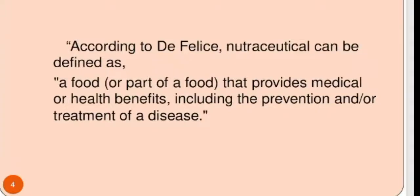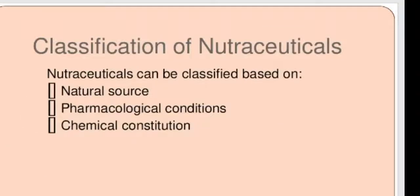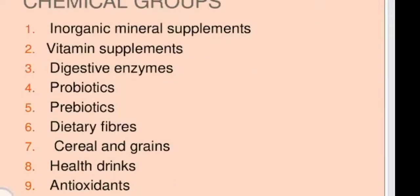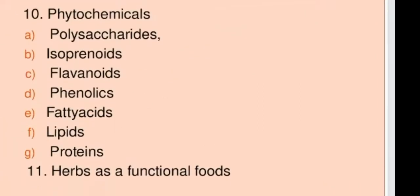The classification of nutraceuticals is based on natural source, pharmacological conditions, and chemical constitution. Based on chemical groups, the classification includes inorganic mineral supplements, vitamin supplements, digestive enzymes, probiotics, prebiotics, dietary fibers, cereals and grains, health drinks, antioxidants, phytochemicals, polysaccharides, isoprenoids, flavonoids, phenolics, fatty acids, lipids, proteins, and herbs as functional foods.